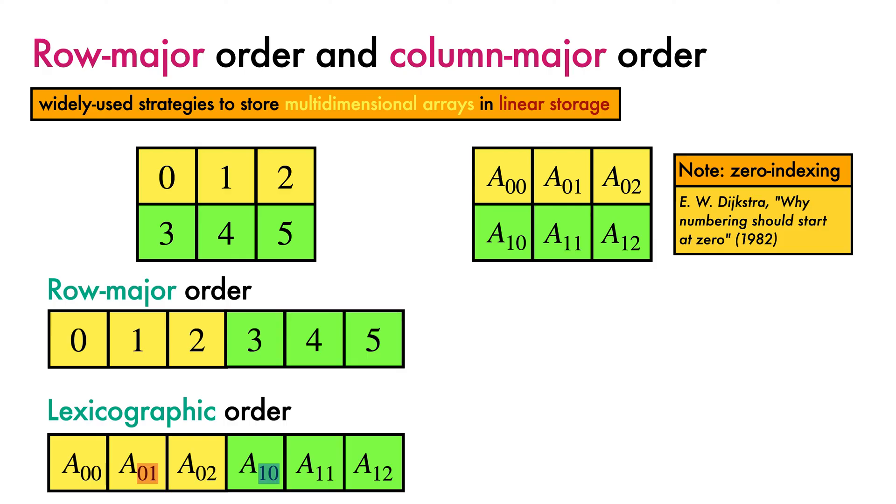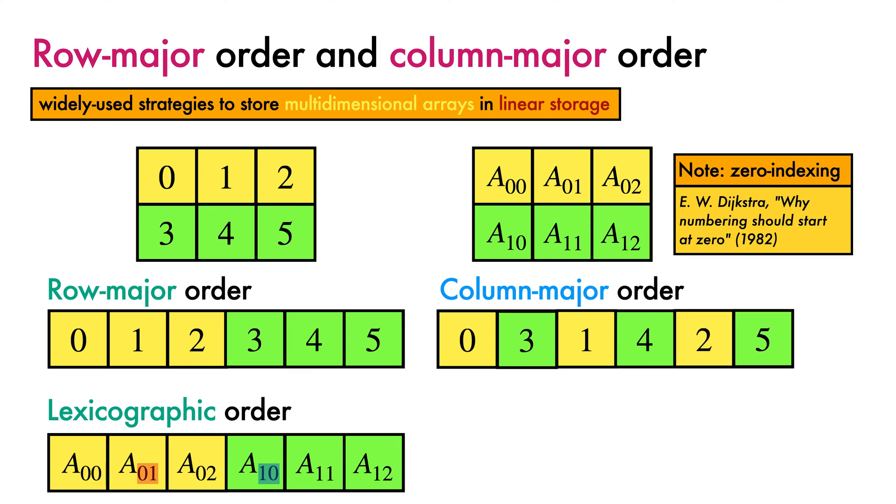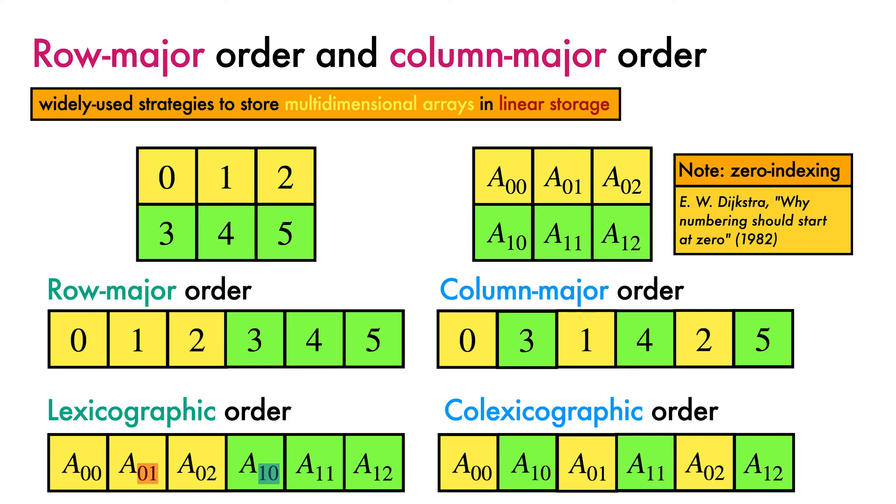A second widely used approach to storage is to use Column Major Order. This time, we flatten the matrix along its columns rather than along its rows. This is also referred to as using colexicographic order. That's because if we examine the ordering of the subscripts, they now follow colexicographic order, in which the later subscript positions carry more weight than the earlier ones, so that a10 now appears before a01.